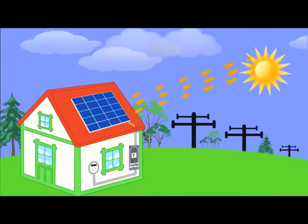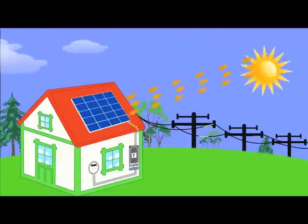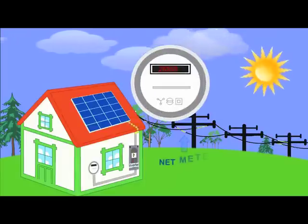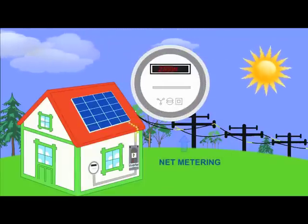What's even better, solar electric systems can produce more electricity than your home needs, and the extra you do not use goes back to your utility grid. This is called net metering, and you'll be able to enjoy watching your utility meter spin backwards.